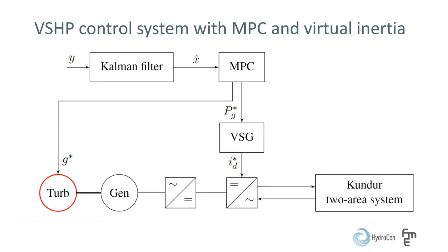This figure shows the layout of the proposed variable speed hydropower control system with model predictive controller, MPC, and virtual inertia. First, a Kalman filter estimates the states of the system. The MPC inputs this and optimizes the system by controlling the guide vane opening reference to the turbine and the power reference to the virtual inertia controller. In this case, a virtual synchronous generator called a VSG. The VSG outputs the current reference in the D-axis to the grid connected converter.